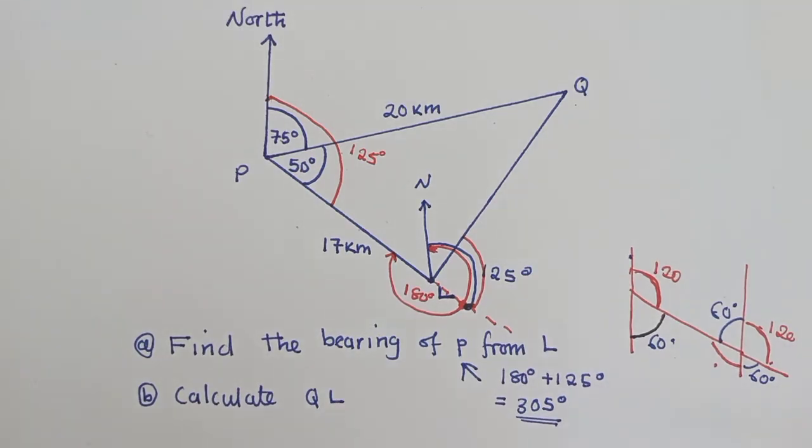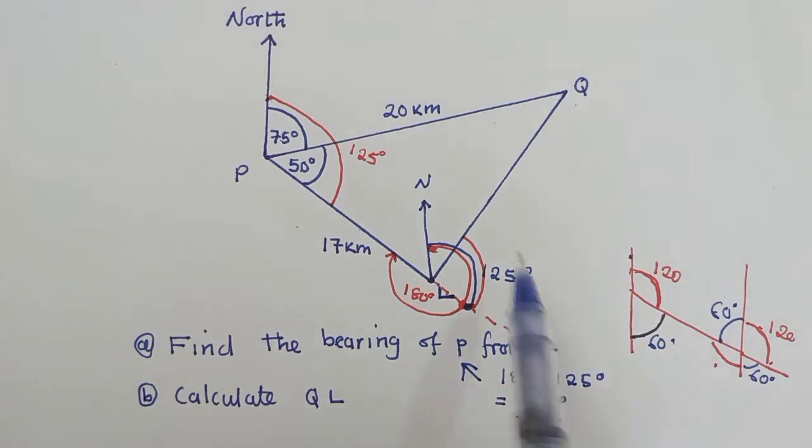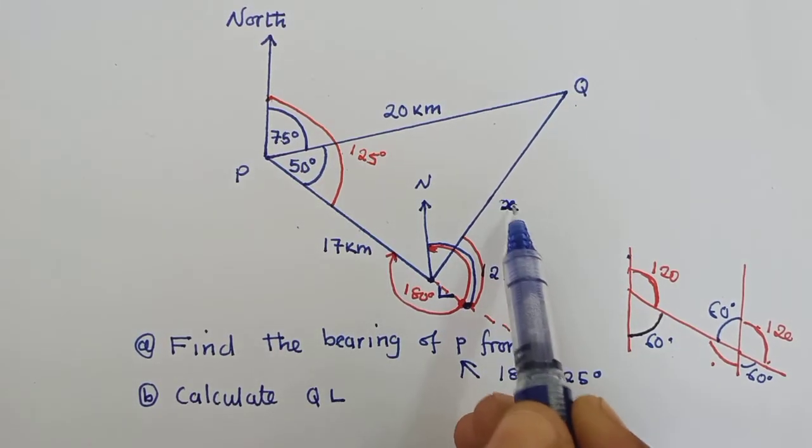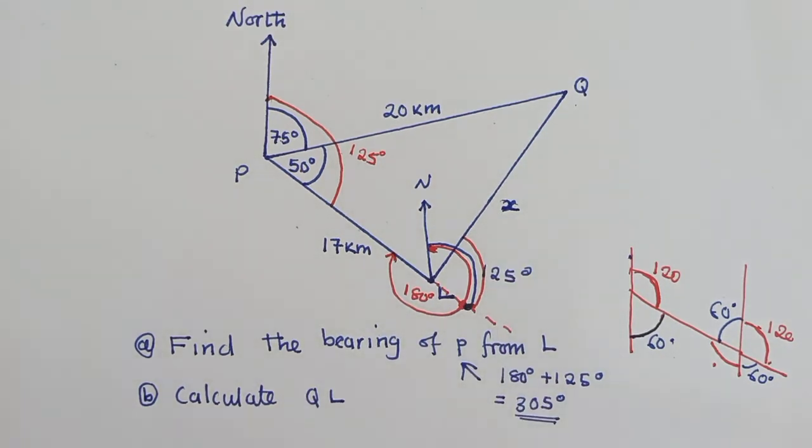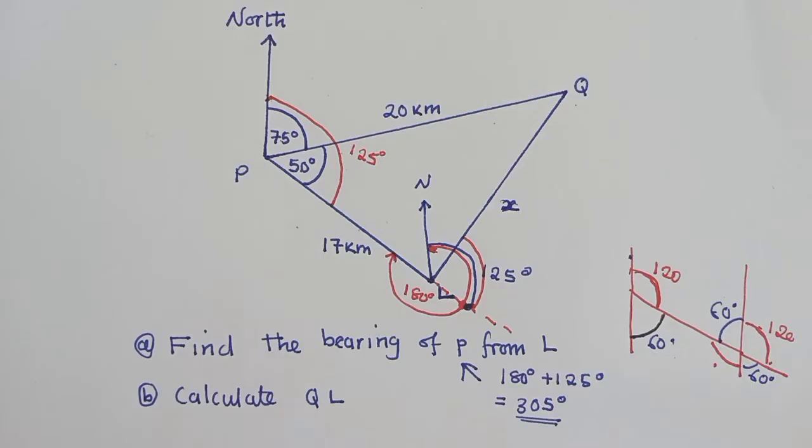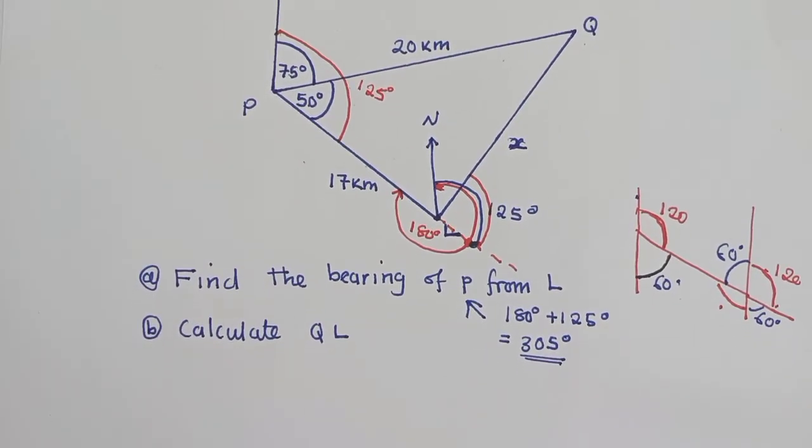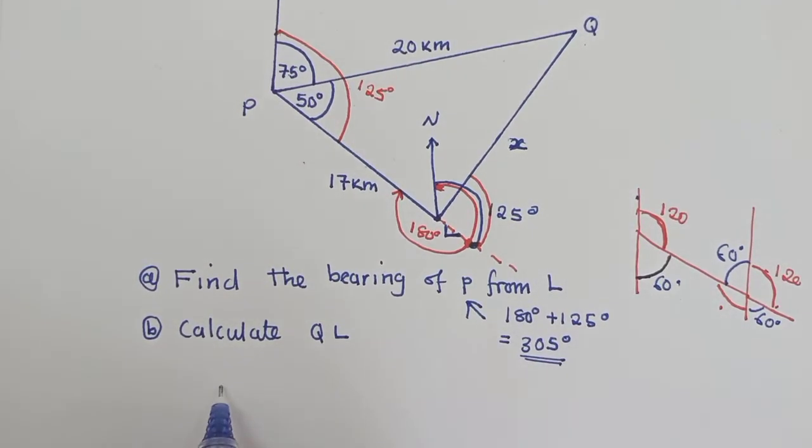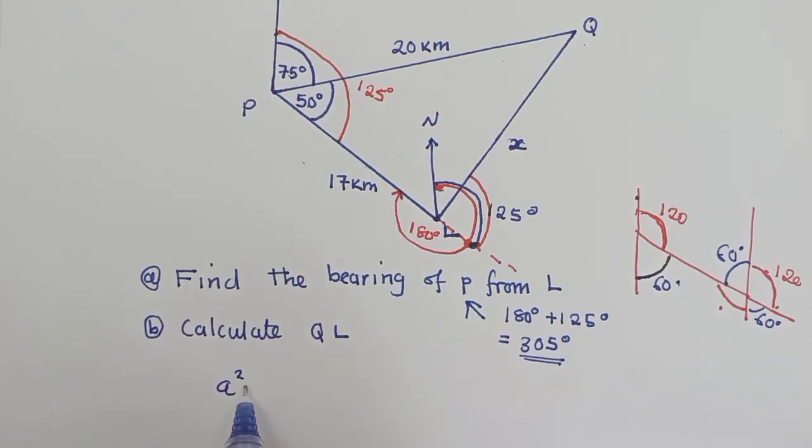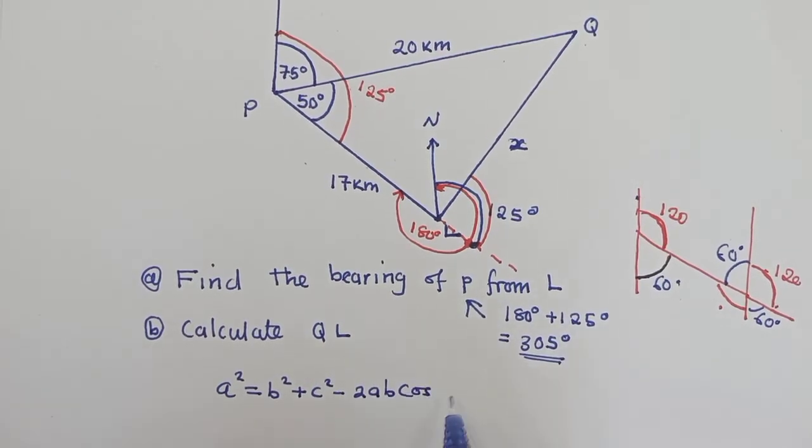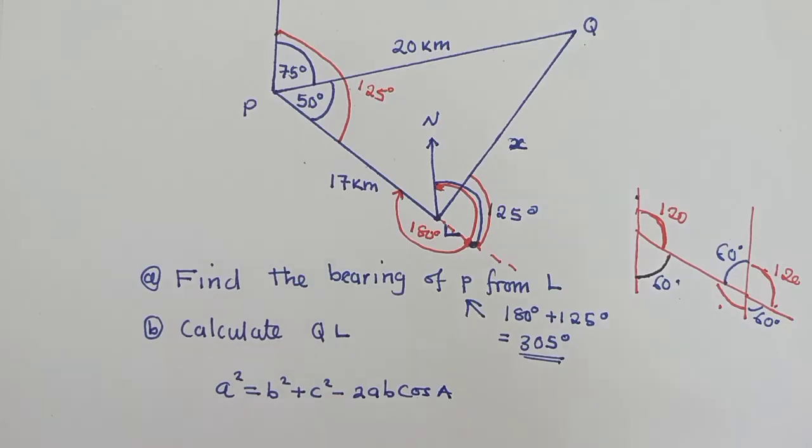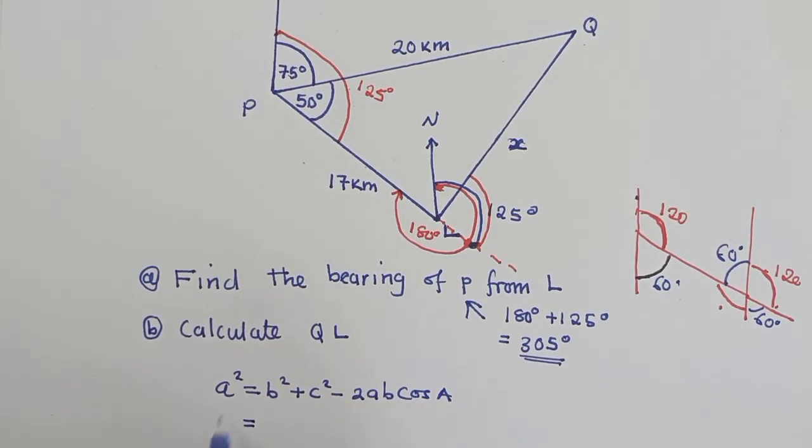The next question they are saying we calculate QL. So we want to find this length QL. So we call this length as X. So if you can see this is trig. We are going to use cosine rule where we shall have A squared is equal to B squared plus C squared minus 2AB cos A. This is it what we are going to use.